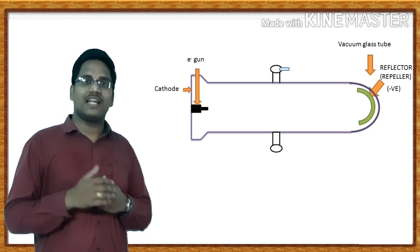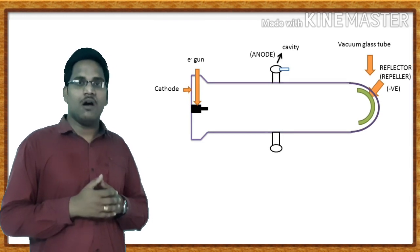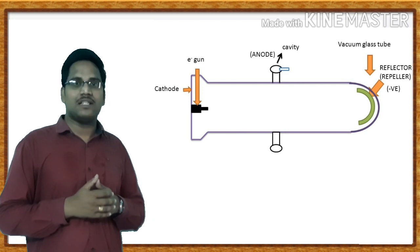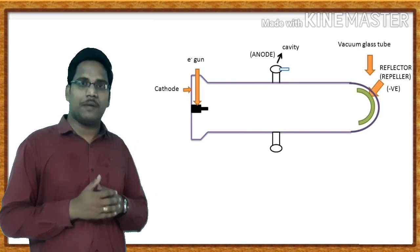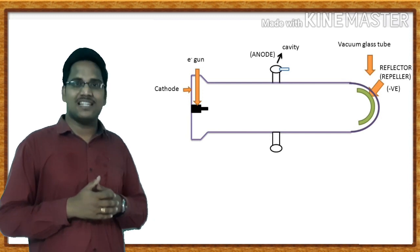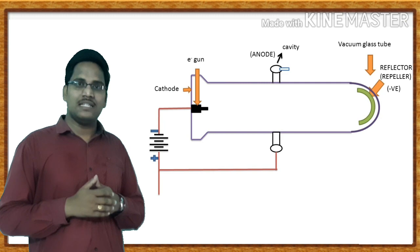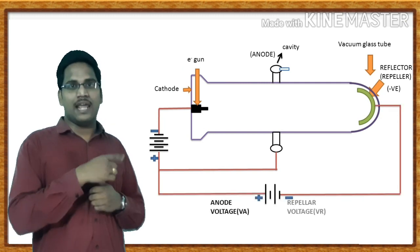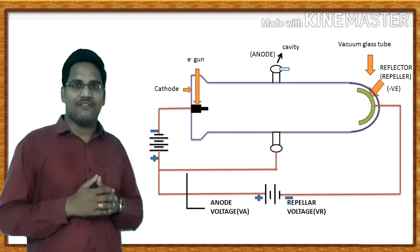The single cavity acts as both a buncher cavity and a catcher cavity separately. At the time of the forward movement of the electron beam, it acts as a buncher cavity, while at the time of the backward movement of the electron beam, it acts as a catcher cavity. This structure uses two voltages: repeller voltage and anode voltage. The repeller is connected to a negative potential and the anode voltage is connected to the single cavity with a positive potential.